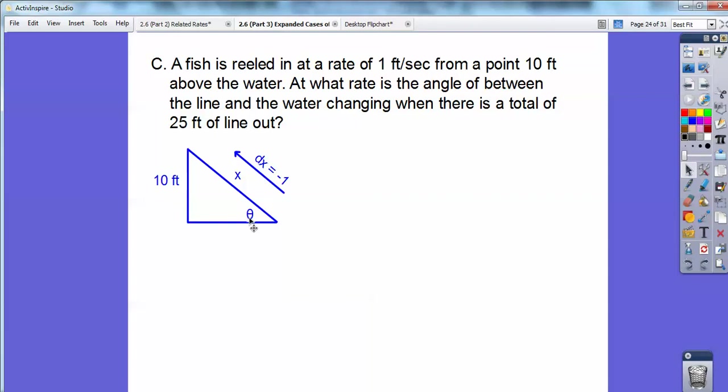We're looking for d theta. So I'm going to use sine, cosine, tangent again. The sine of this angle is going to be opposite over hypotenuse, so 10 over x, which is 10x to the negative 1. And then when I differentiate that, the derivative of sine is cosine, d theta, equals the derivative of 10x to the negative 1, which is negative 10x to the negative 2.